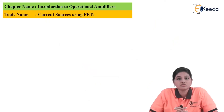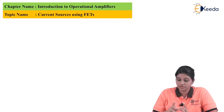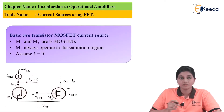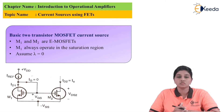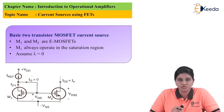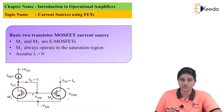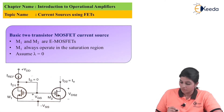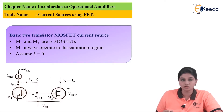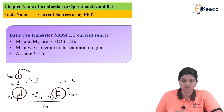To understand current sources using FET, we consider a circuit in which M1 and M2 are two enhancement MOSFETs. The circuit is similar to the one implemented using BJT; the only difference is that the BJT is replaced by the MOSFET. The drain and gate terminals of M1 are connected together so that it always operates in the saturation region.